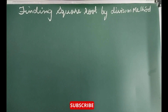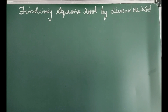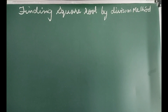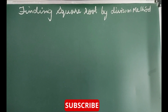Finding square root by division method. We have learned the method of finding square root of a number by prime factorization method. But when the numbers are large, even the method of finding square root by prime factorization becomes lengthy and difficult. To overcome this problem, we use long division method.